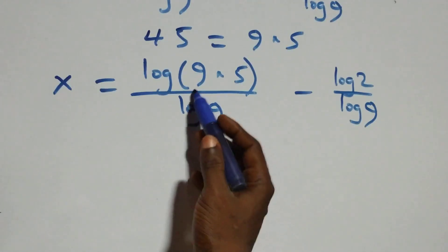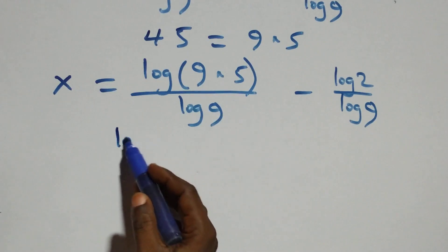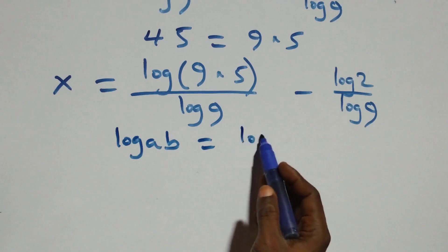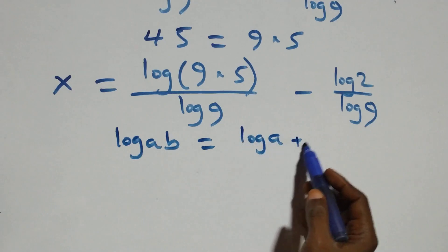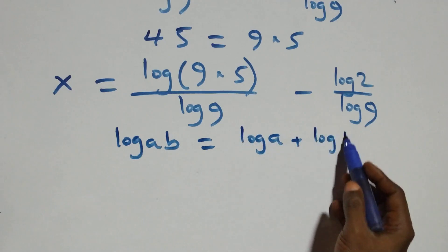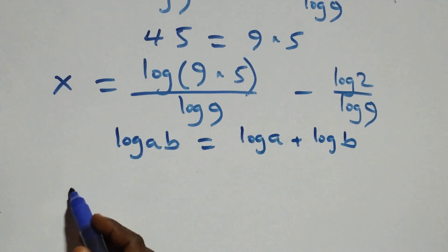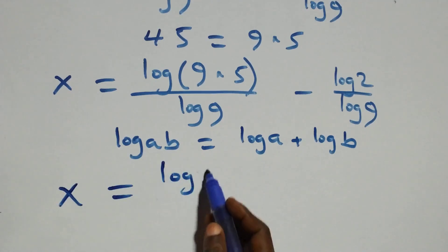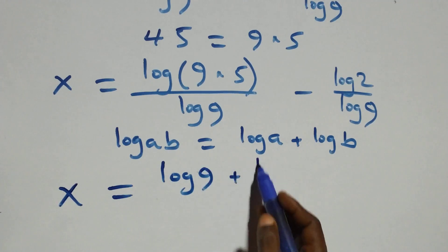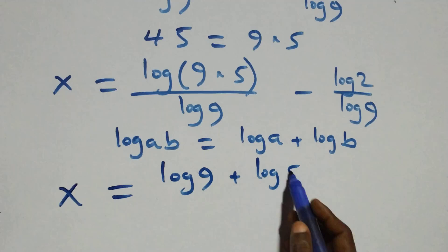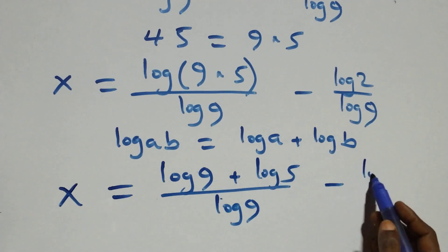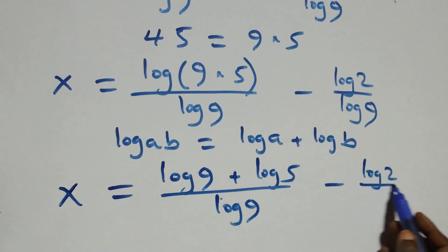Then, from here, we apply the log product rule. When we have log(a times b), it is the same thing as log a plus log b. So what we have here becomes x equals to log 9 plus log 5, all over log 9, minus log 2 over log 9.